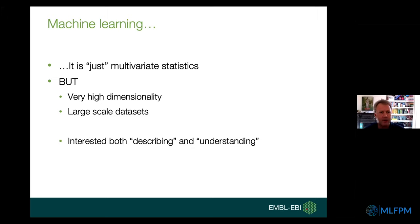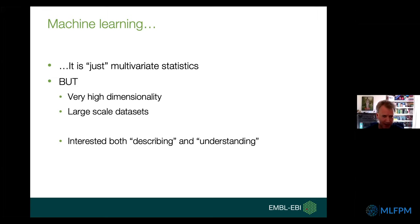A lot of this ends up being about — choose your phrase — machine learning. I've decided to call it machine learning because that's the name of your course. If you went back 20 years, it'd be called multivariate statistics. If you want to be super trendy, you can call it AI or deep learning. In some sense, this is all just very high dimensionality — lots and lots of measurements at the same time, often highly correlated with each other, on very large-scale datasets. We're trying to do two different things: either multivariate statistics, machine learning, or deep learning.